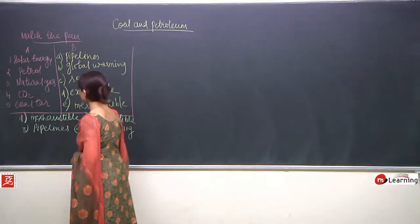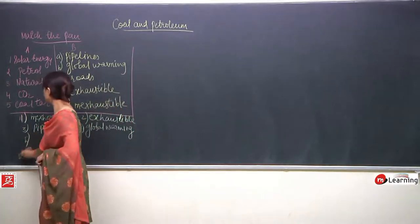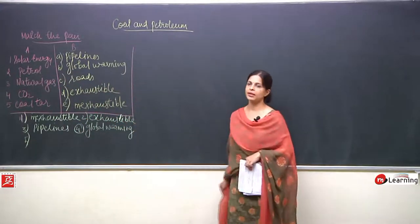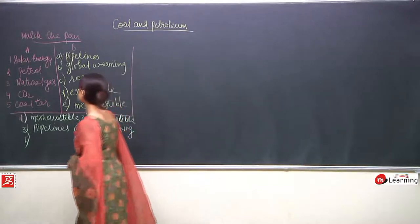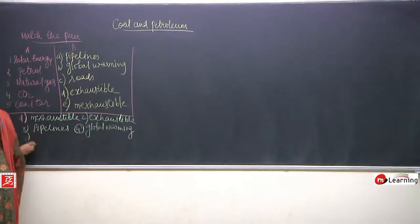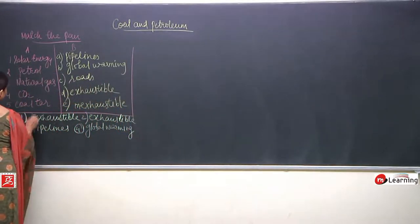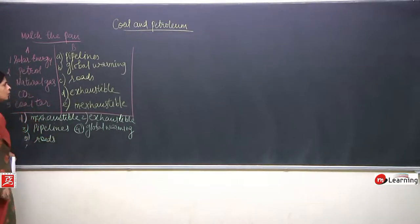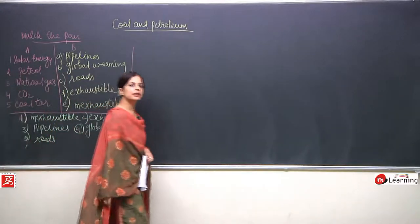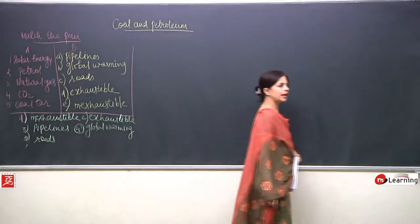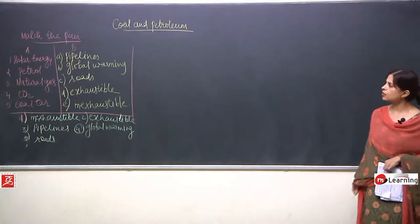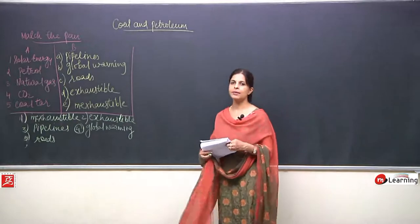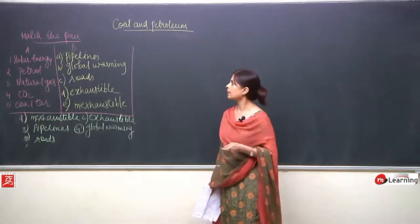Now the last one, the fifth one, is coal tar. Coal tar is used in the making of roads, so for coal tar I will write roads. This was the next match the pairs, and again I will say: as soon as you see the Column A, some answer should come to your mind.